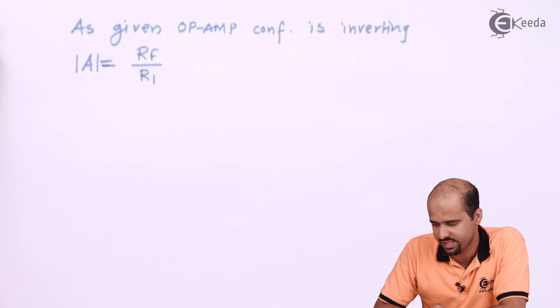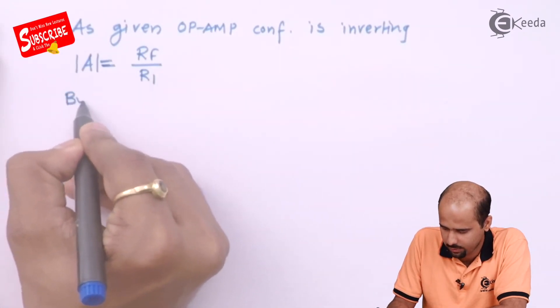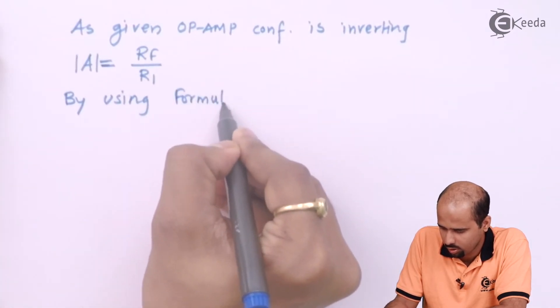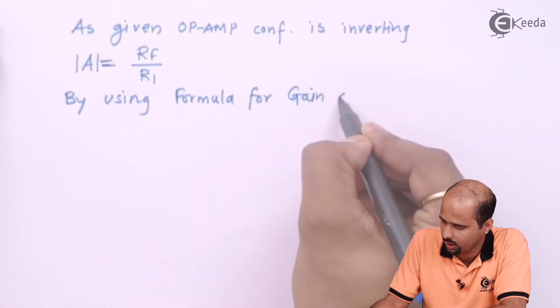Once we decide that RF divided by R1 is A and furthermore with by using formula for gain of